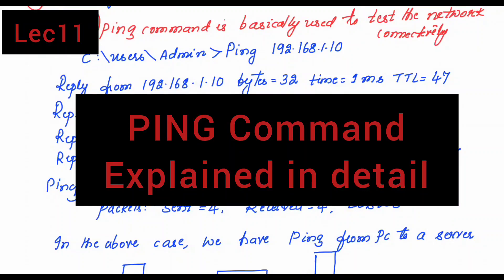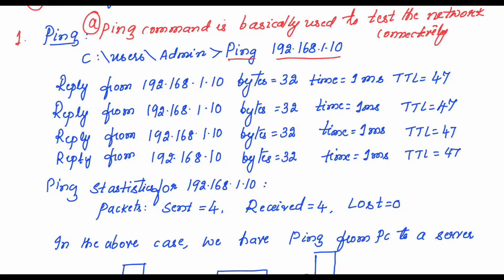Ping command is basically used to test the network connectivity. You are going to type the command ping followed by the IP address. Once you type this, that means you are going to test whether you are able to reach 192.168.1.10.